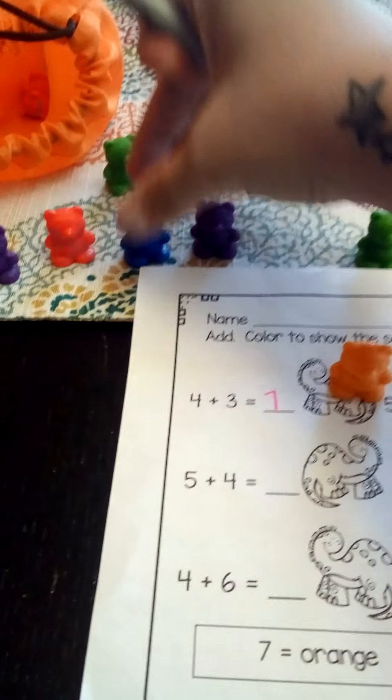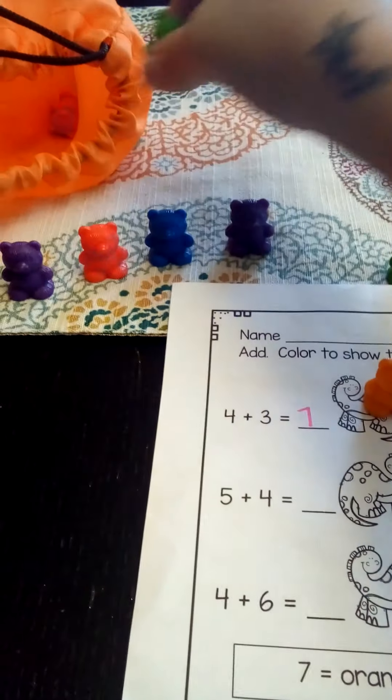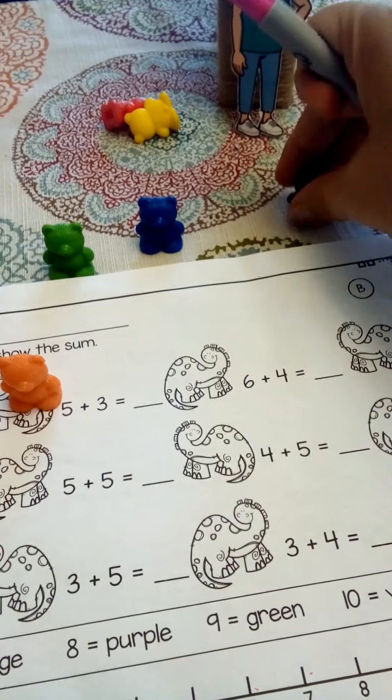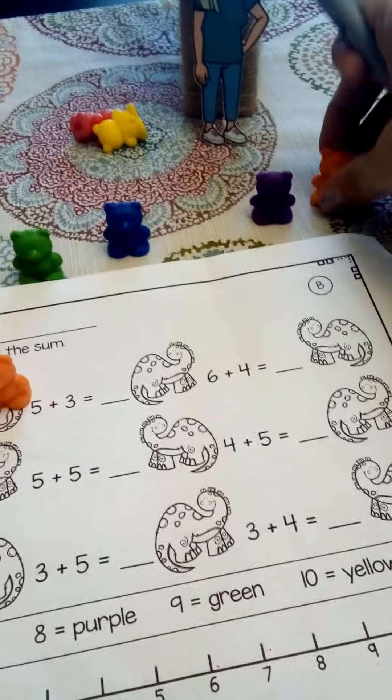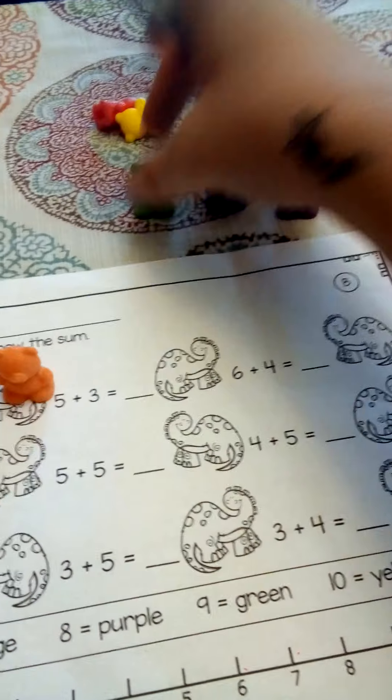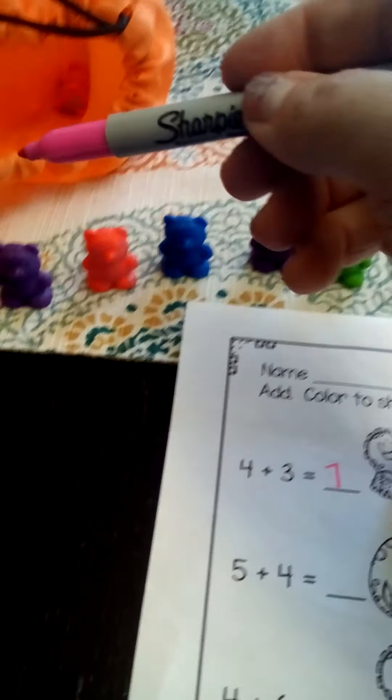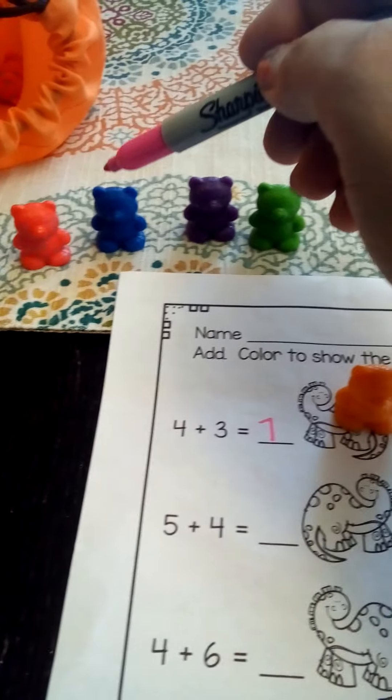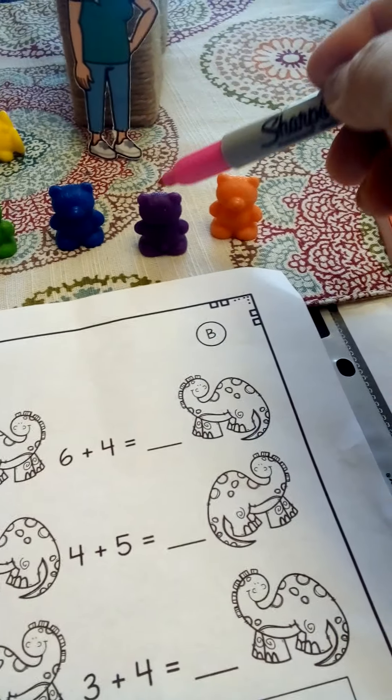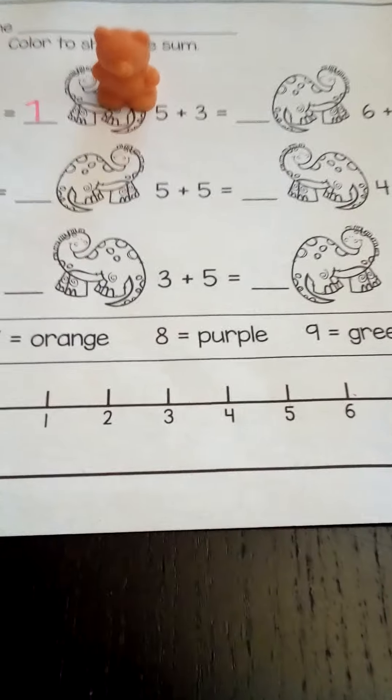So we need five bears. One, two, three, four, and five. And we need four bears. One, two, uh-oh, three and four. And let's count them all up. One, two, three, four, five, six, seven, eight, nine. So we have nine bears, but let's check on our number line. Okay.